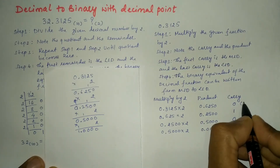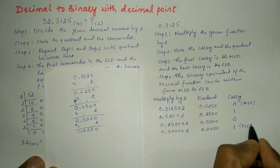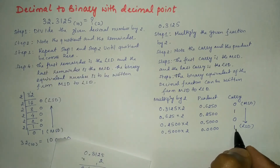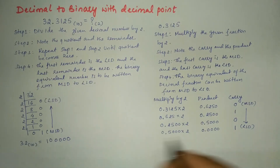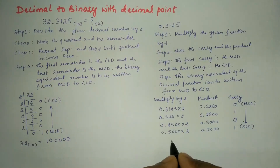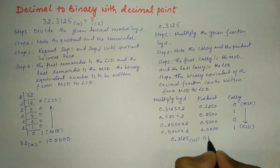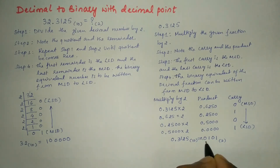The first carry is the most significant digit and the last carry is the least significant digit — we write from top to bottom. Therefore 0.3125 base 10 = 0.0101 base 2.